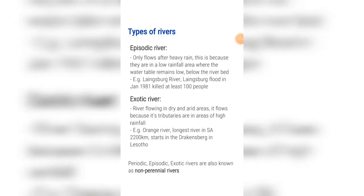An episodic river only flows after heavy rain. This is because they are in low rainfall areas where the water table remains low, below the river bed. These rivers can be especially dangerous because for long periods of time — for years — they can be just a dry river bed, and a lot of people think they are no longer flowing. But if there is a sudden increase in rainfall, all that rain is channeled into the river and it can flow for a short period of time.